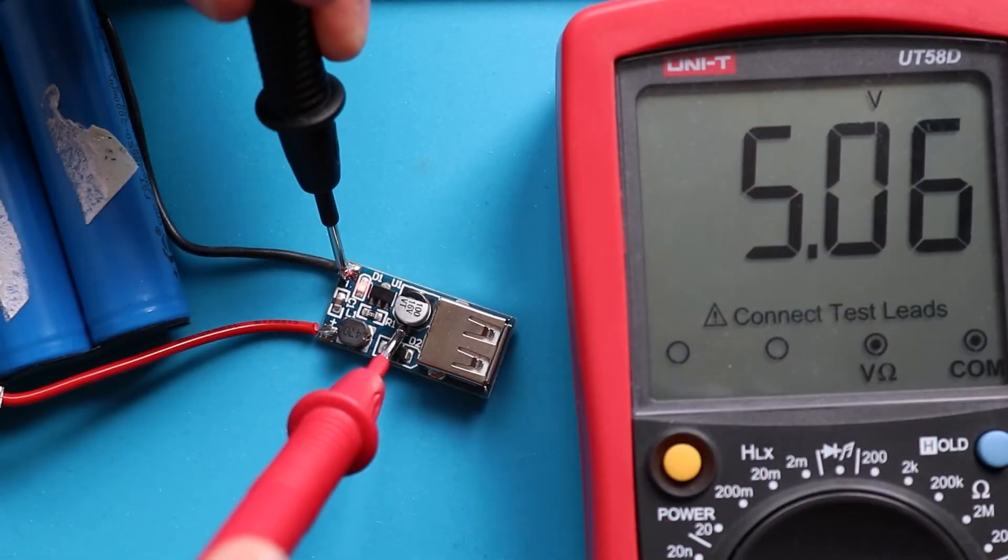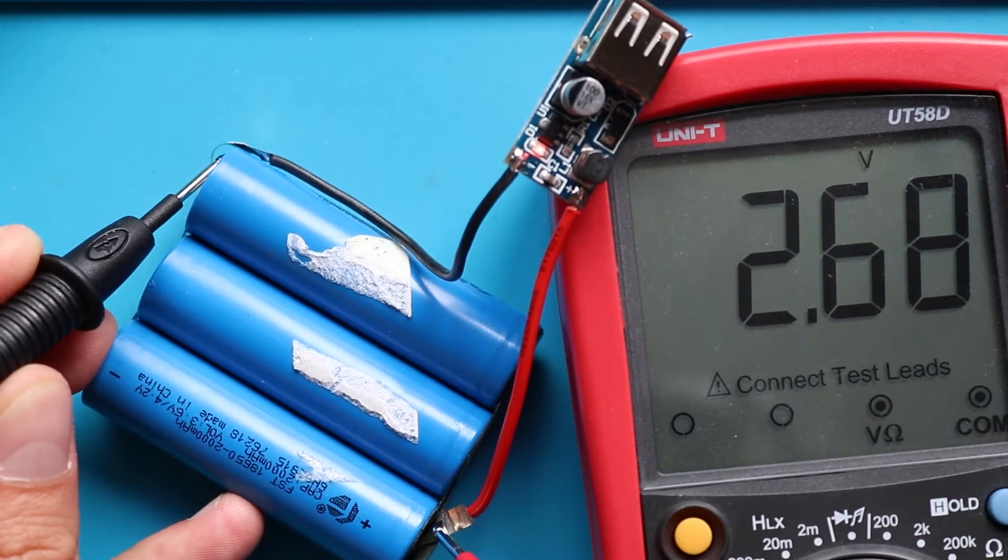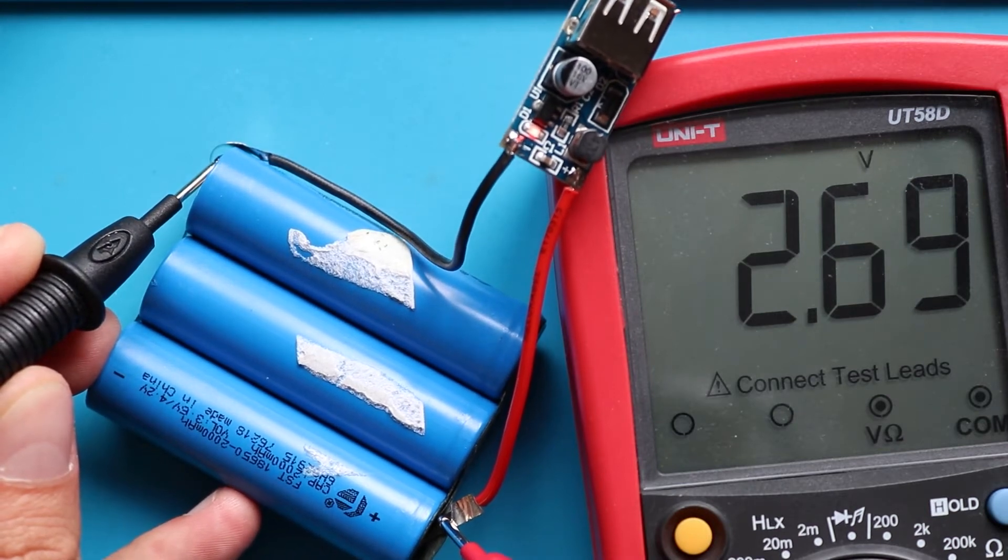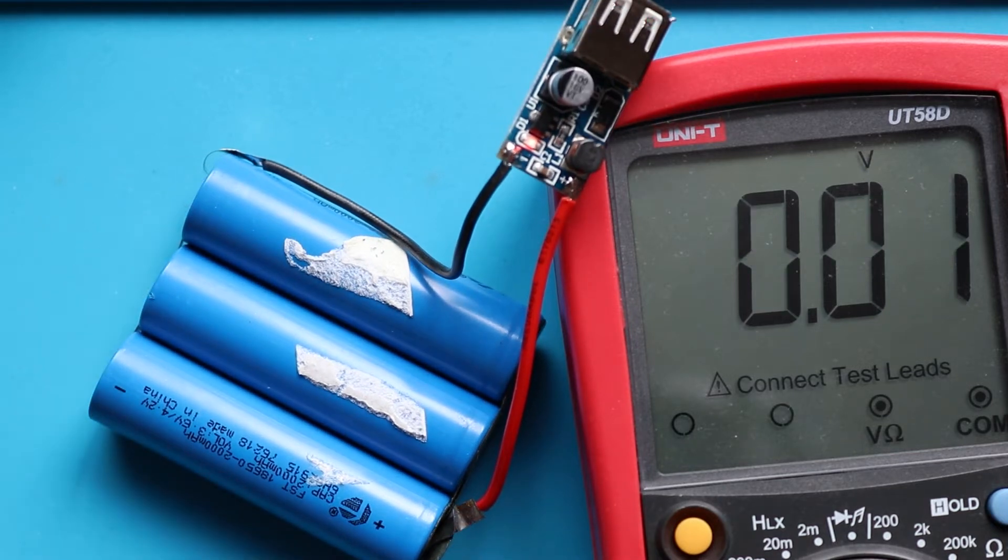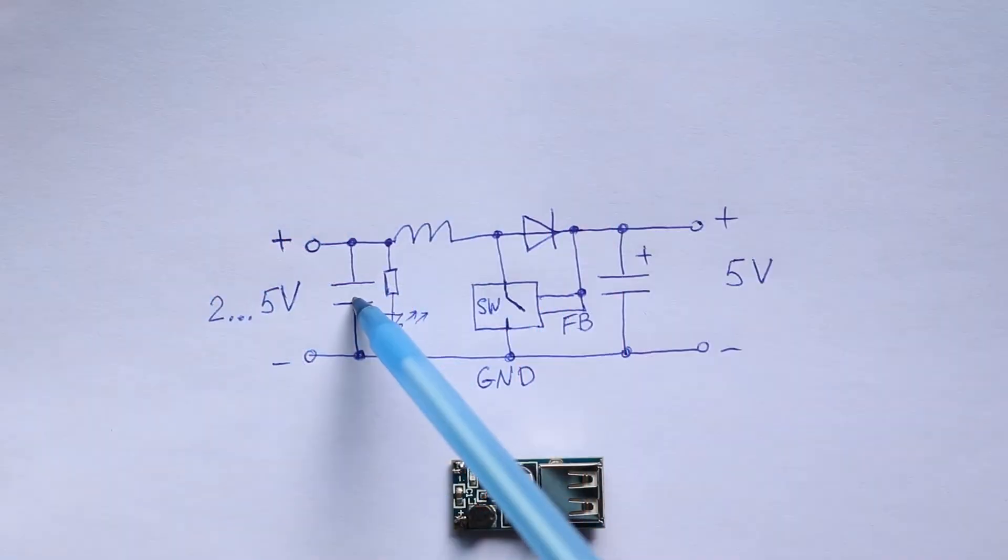But before we start, we need to check whether it works at all. Yeah, 5 volts at the output when input is 2.7 volts. And yeah, don't forget to draw a schematic of a PCB you want to reassemble. Schematic of this exact PCB looks like that and it's pretty simple. That's a conventional boost converter.